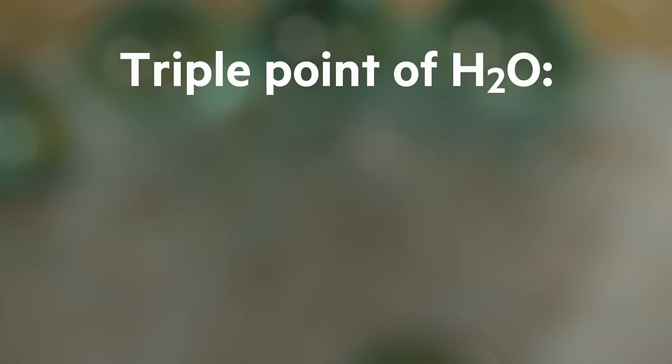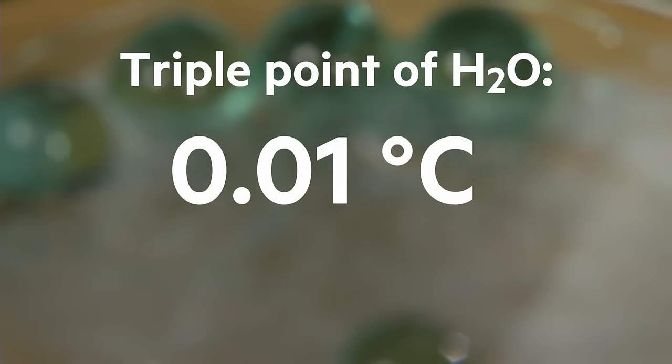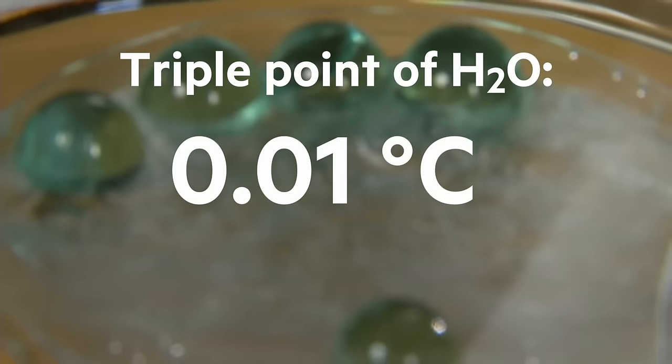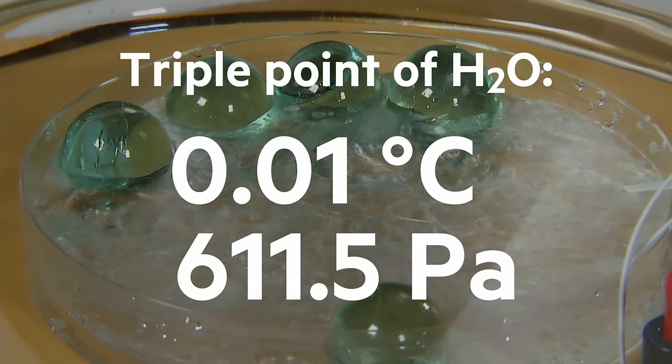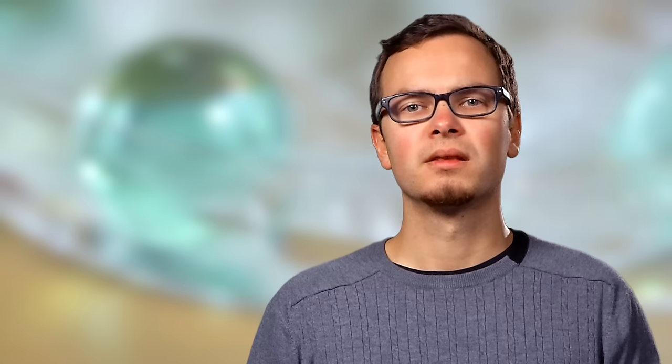Pure water has a triple-point temperature of 0.01 degrees Celsius and a triple-point pressure of 611.5 Pa. This is the same as about 0.6% of the usual atmospheric pressure. At this point water will exist both as ice, as liquid and as vapor. Let's see what this looks like in practice.